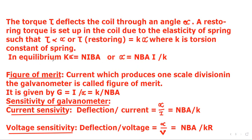Now in equilibrium, the two torques must be equal, so k times alpha must equal NIBA, or alpha equals NBIA divided by k.